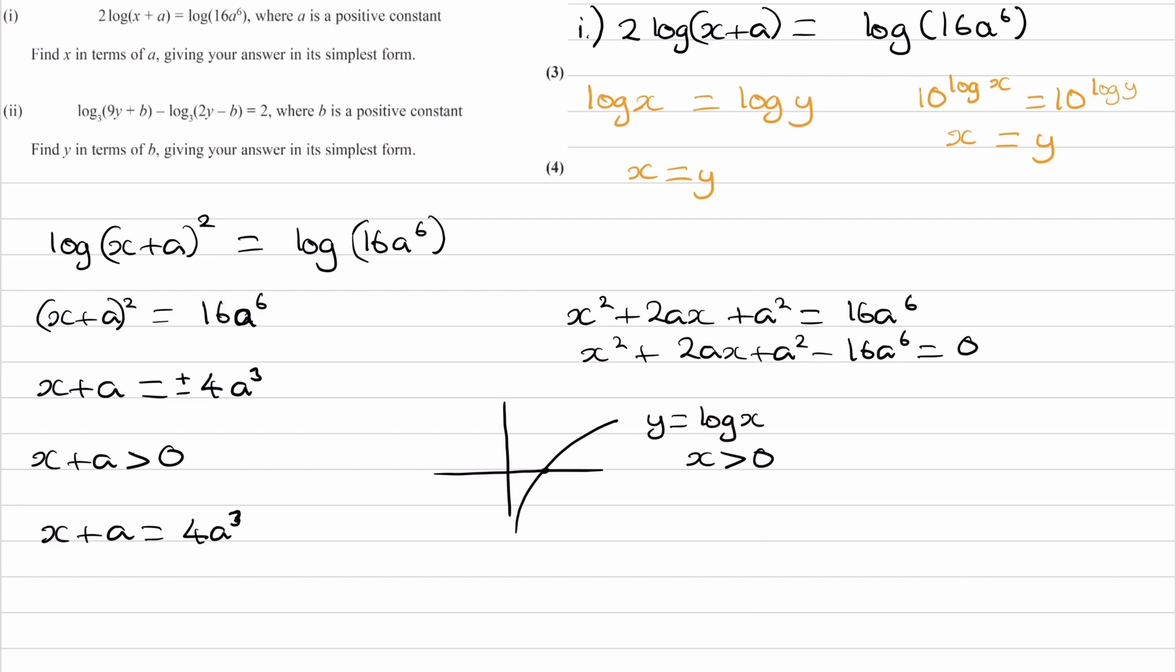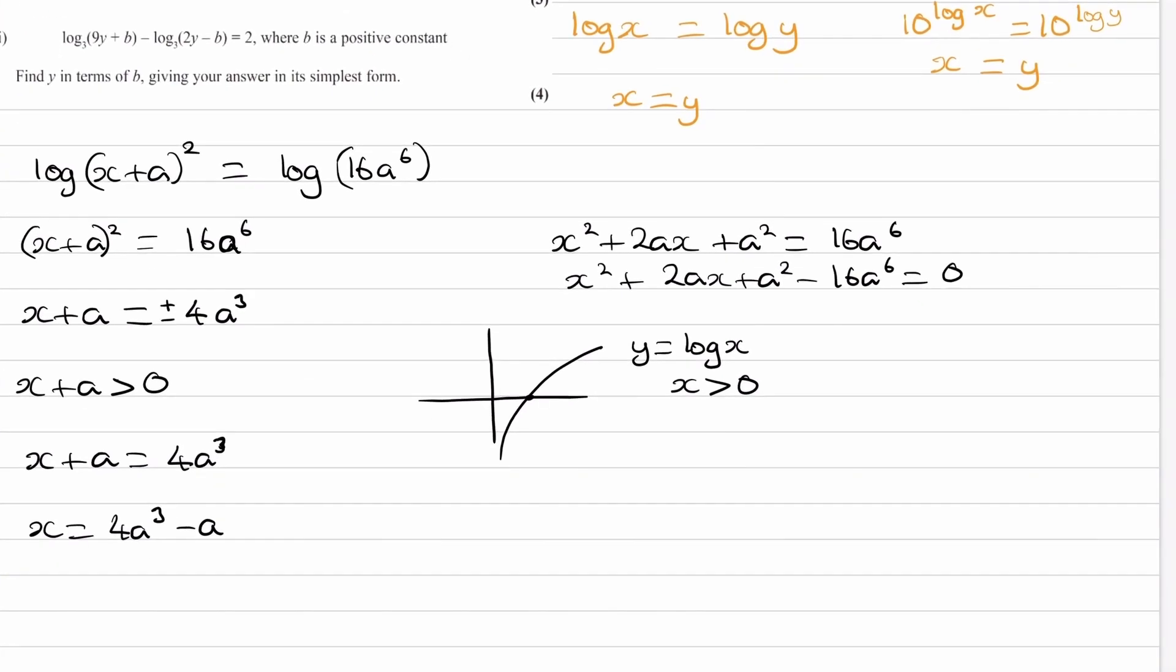And then we can rearrange. So we get x is equal to 4a to the power of 3 minus a, and that will be our answer.